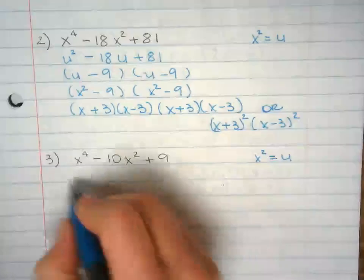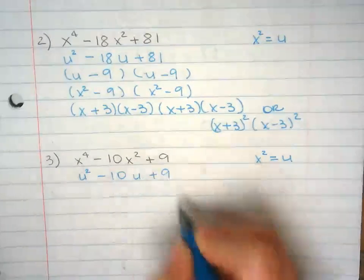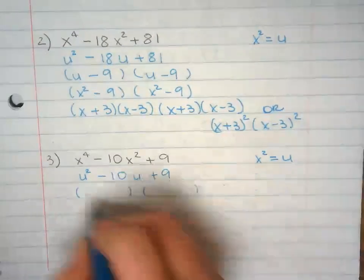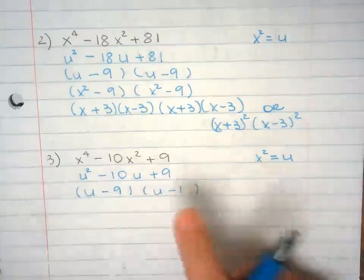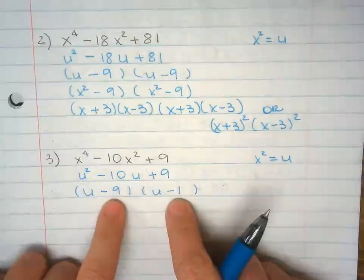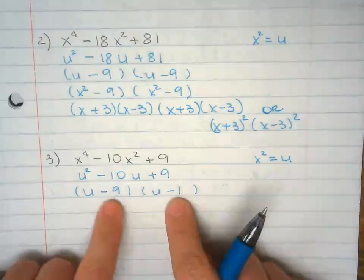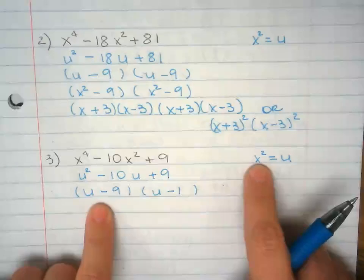Substitute. Factor. Negative 9 times negative 1 is positive 9. Add them together is negative 10. I'm going to go back to x squared.